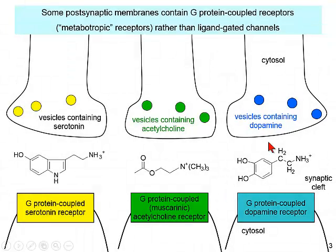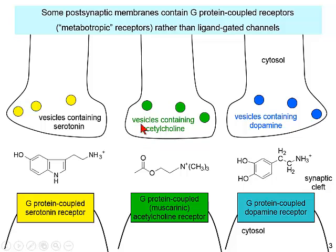Some postsynaptic membranes contain G-protein coupled receptors, sometimes called metabotropic receptors because they have a little metabolism involved, rather than ligand-gated channels. G-protein coupled receptors, because of their unique kinetics and high sensitivity to neurotransmitters, don't need to be right at the synaptic cleft — they can be several microns away. There are G-protein coupled receptors for serotonin, for acetylcholine (again muscarinic), for dopamine, and for dozens of other neurotransmitters.